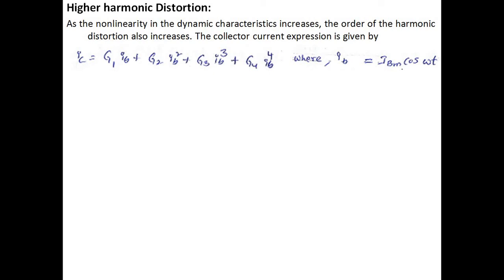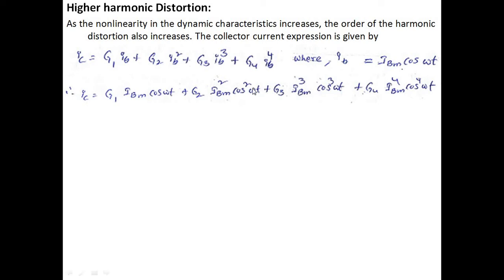We can write the fundamental formula for the collector current: ic = g1·ib + g2·ib² + g3·ib³ + g4·ib⁴. We are restricting to ib power 4 for simplicity; it can be extended to any number of harmonic components. We know the base current equation: ib = ibm·cos(ωt). Substituting this into the ic equation, we rewrite ic accordingly.